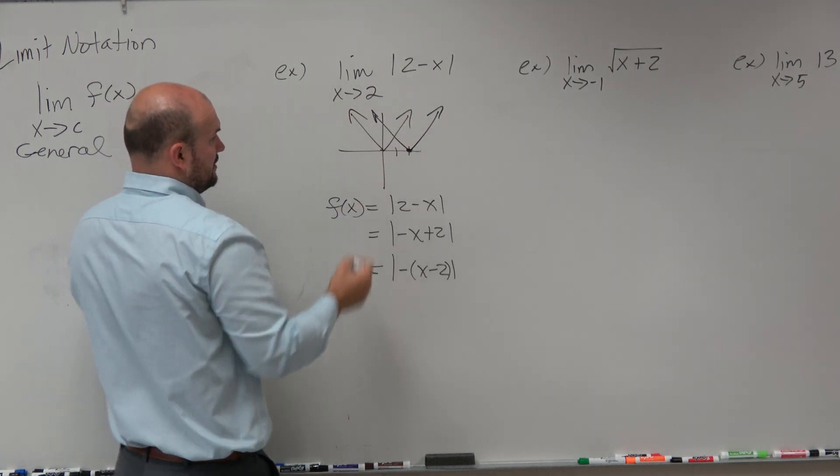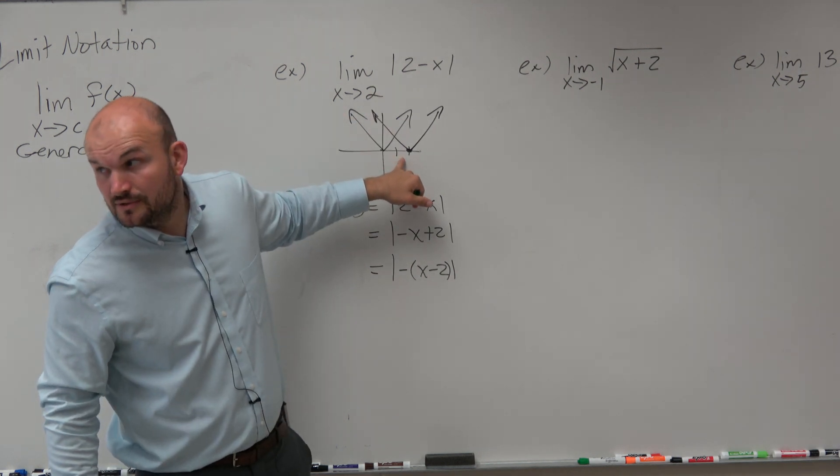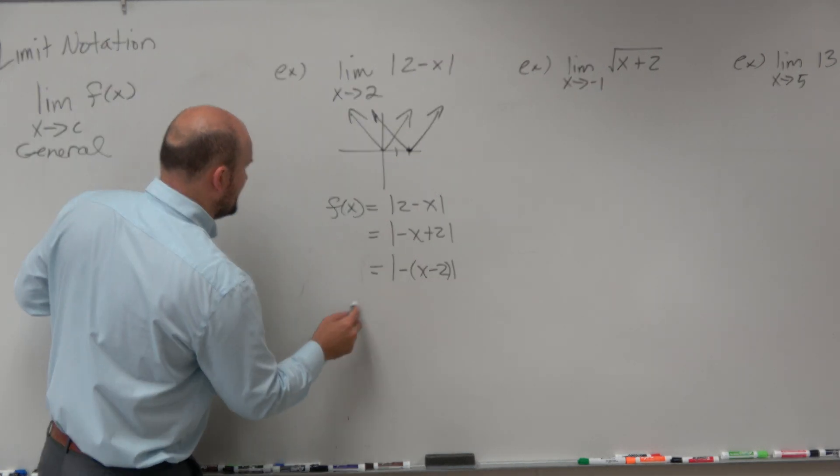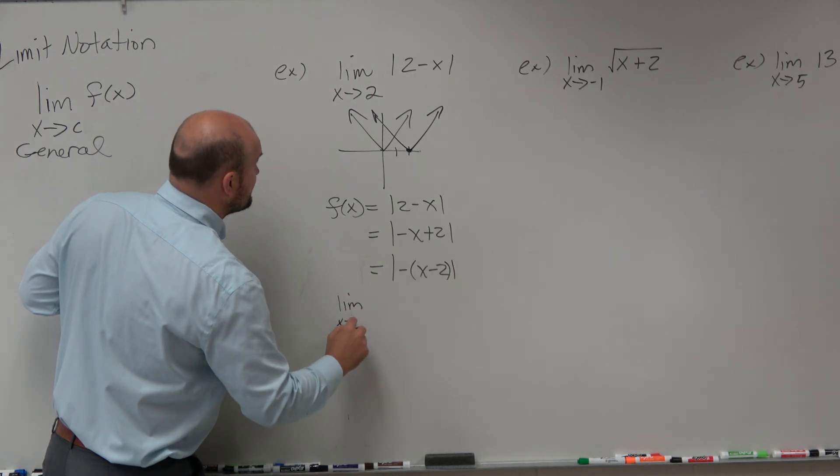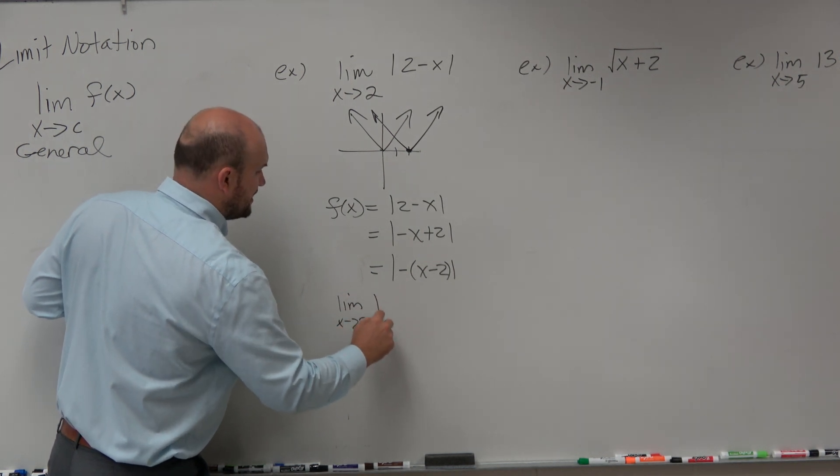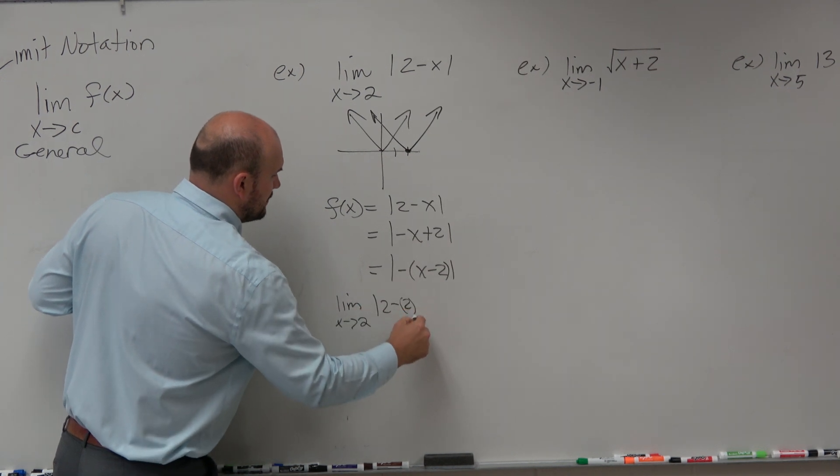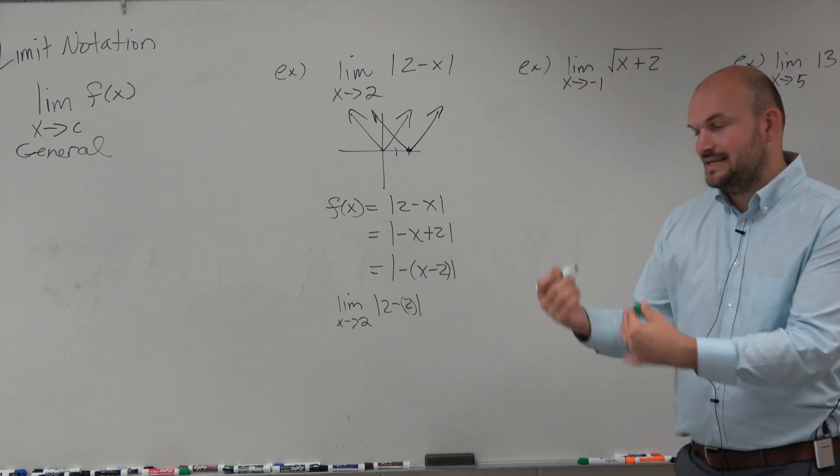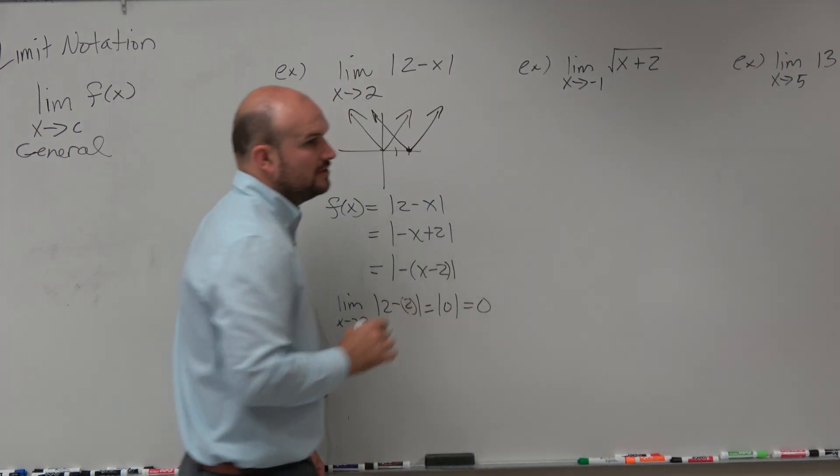Because if we're evaluating the limit, is it continuous at 2? Is this graph continuous at 2? Yeah. So we just need to figure out what that value is, which you know is 0. So if we're going to evaluate this limit, all we simply need to do, the limit as x approaches 2, we just need to plug in 2 into the equation. So the absolute value of 2 minus 2 is equal to the absolute value of 0, which is just equal to 0.